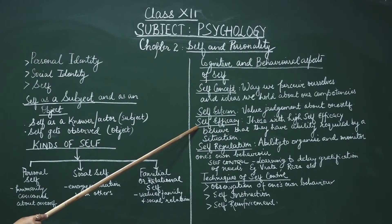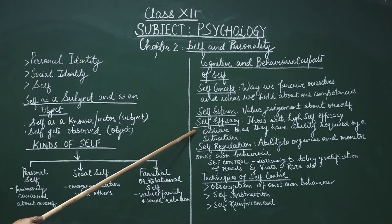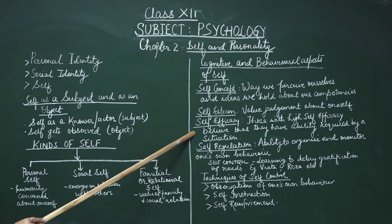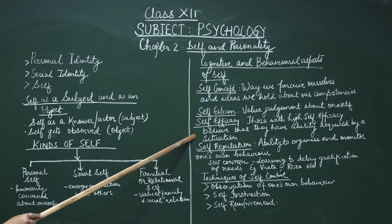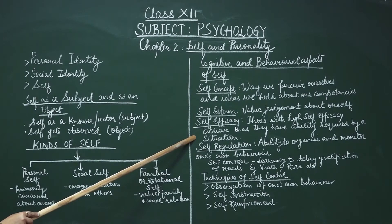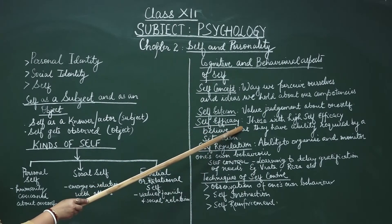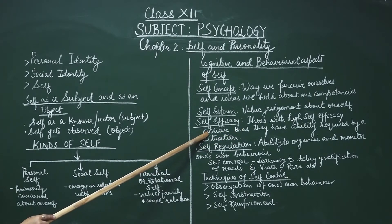The next cognitive aspect is self-efficacy. People differ in the extent to which they believe they can control the outcomes of life, or whether outcomes are controlled by luck or fate. The notion of self-efficacy is based on Bandura's social learning theory. Those people who have high self-efficacy believe they have the complete ability required by a situation and can control the outcomes of life.